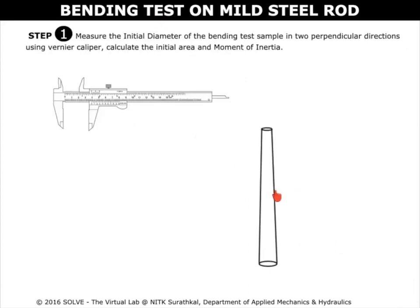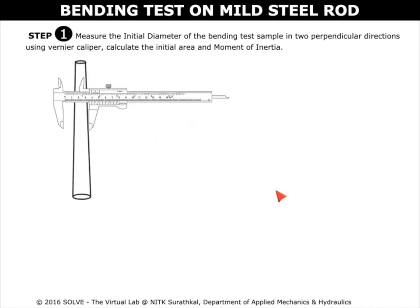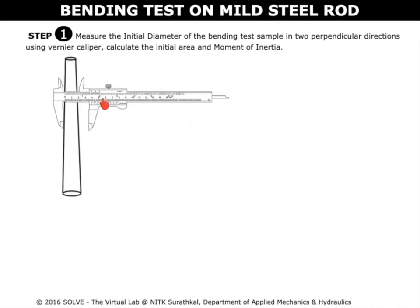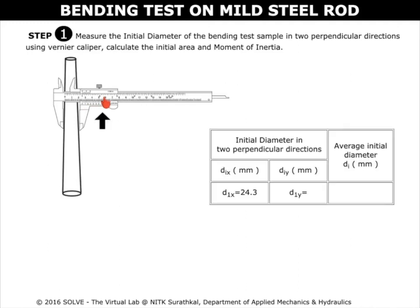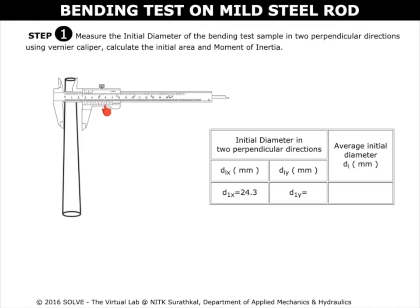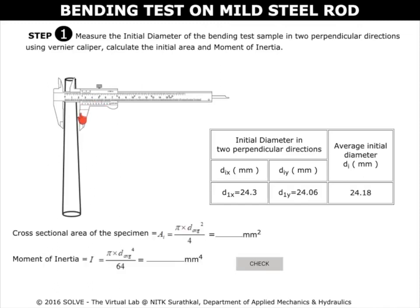Click on this bending test sample to measure the diameter in two perpendicular directions using vernier calipers. Measure the diameter in one direction and click once again to find the diameter in the second direction. The average diameter is then determined. Using this formula, calculate the cross-sectional area of the specimen.